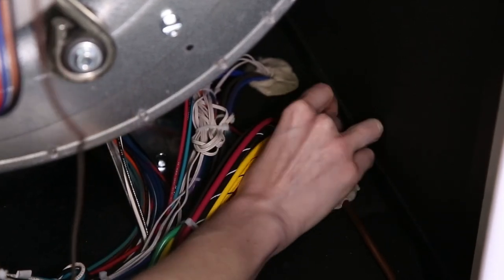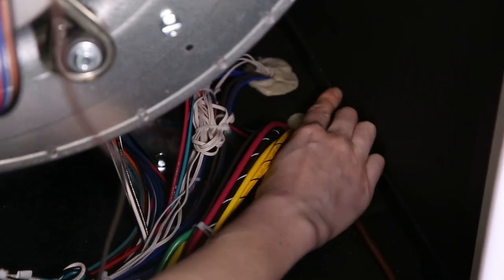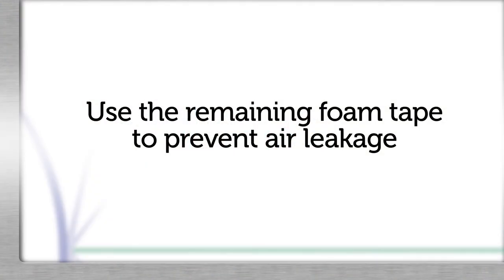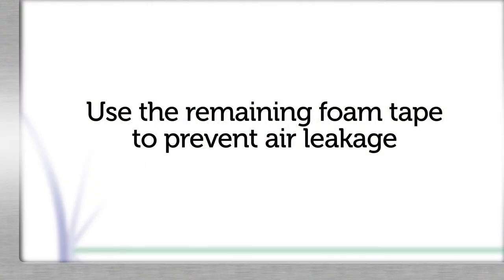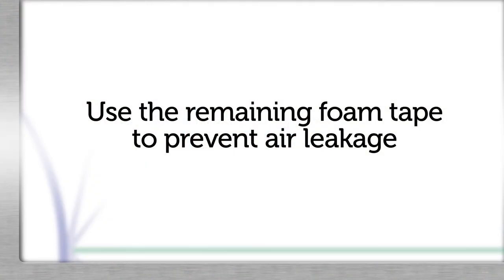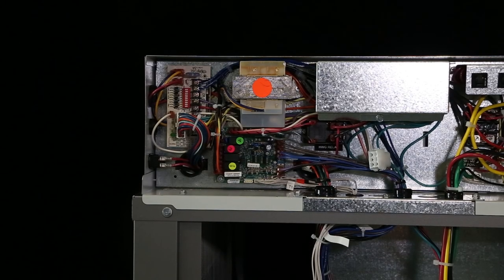Reinsert the sealing compound into the wiring access hole at the bottom of the blower compartment. Using the rest of the provided foam tape, cover any gaps in the bottom of the top cover control plate where all the wiring connections are made in order to prevent air leakage.